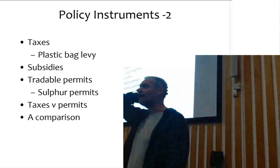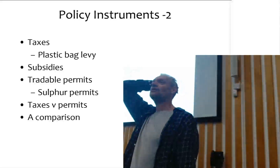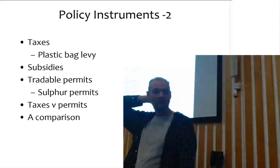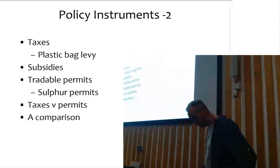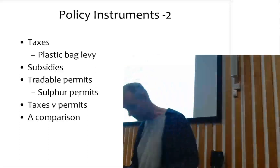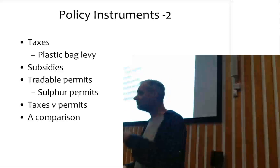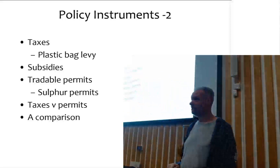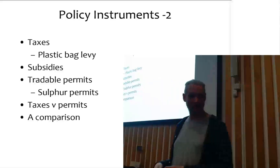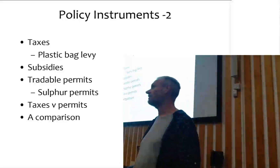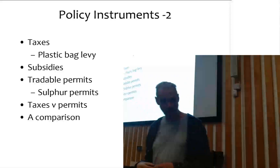Last week I talked about voluntary measures, the COSFIRM, which we also did yesterday, and command and control or direct regulation. Today I'm going to talk about market-based instruments for environmental policy — specifically taxes, subsidies, and tradable permits.